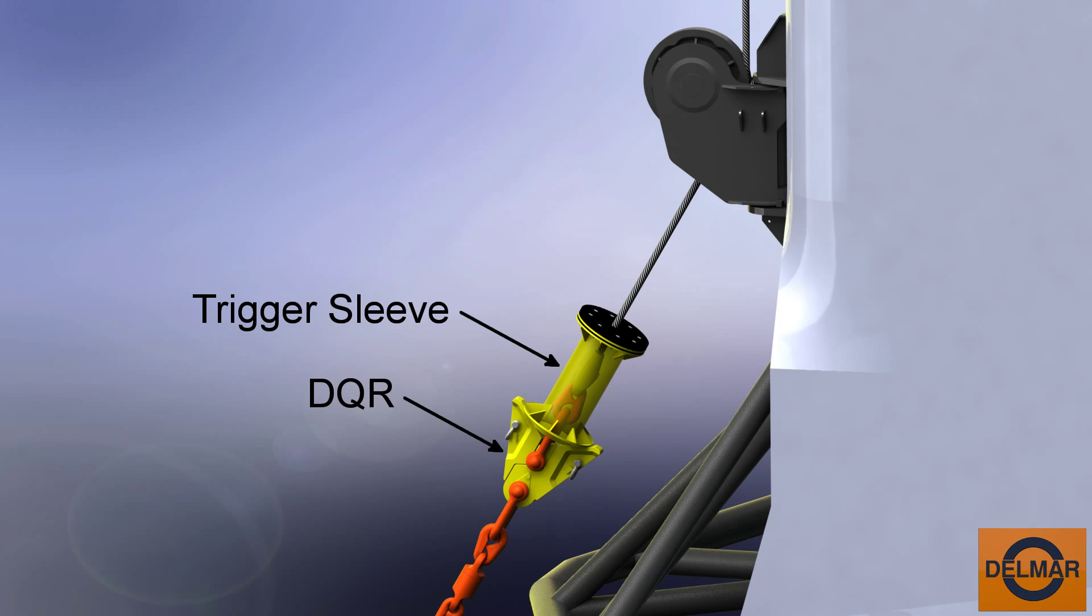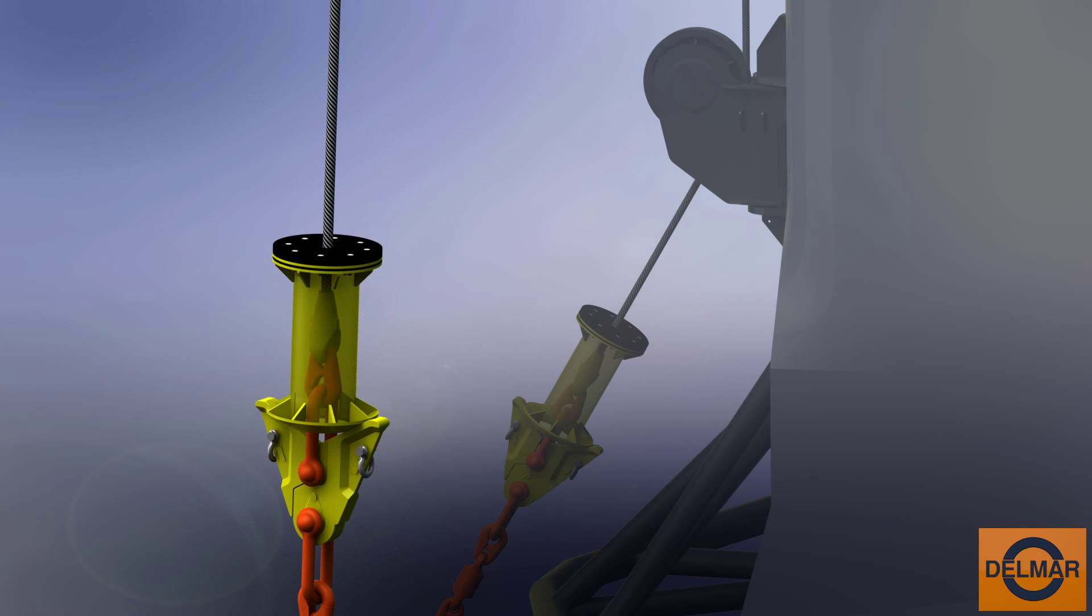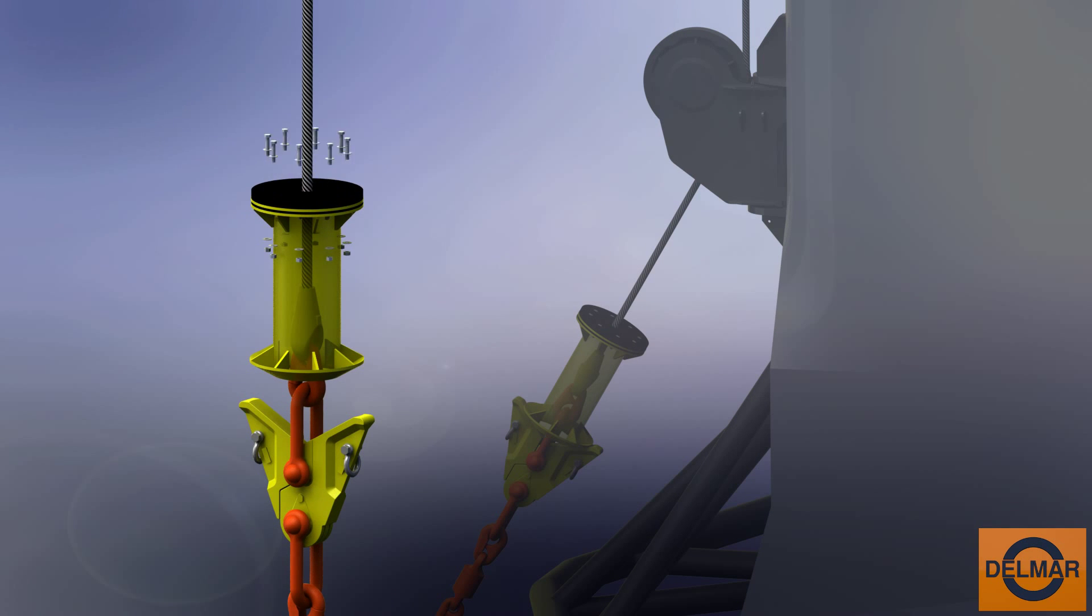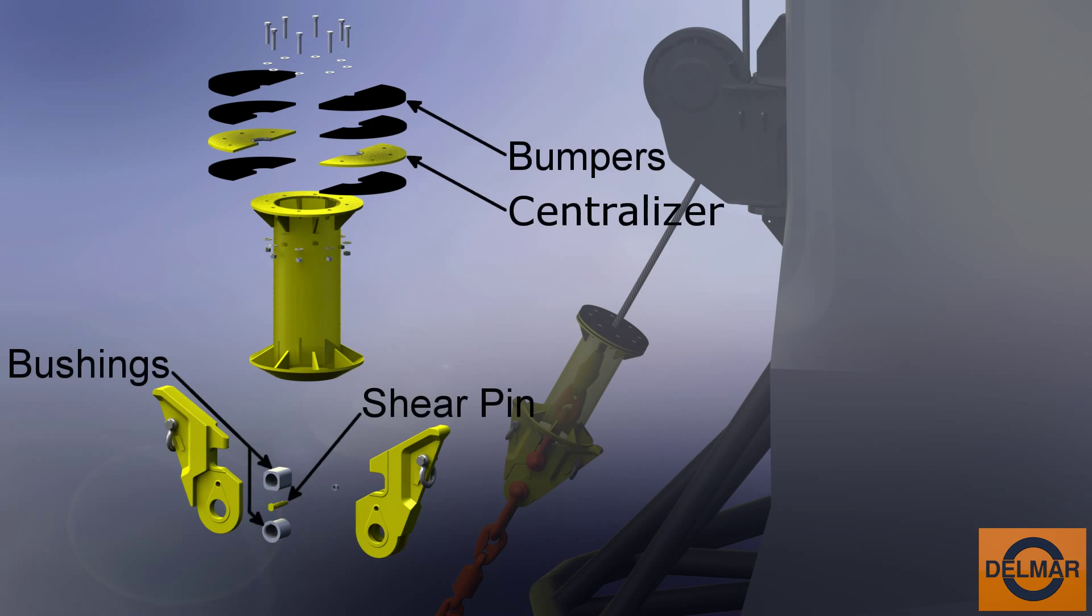The trigger sleeve and DQR are pre-installed on the mooring equipment during initial hookup operations. Bringing both operational and engineering expertise together, the integrated Delmar team designed the DQR to be handled safely using standard anchor handling methodology.